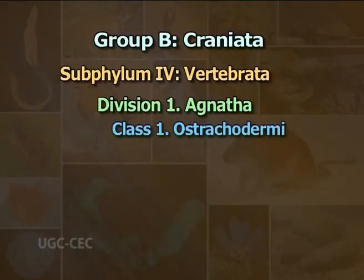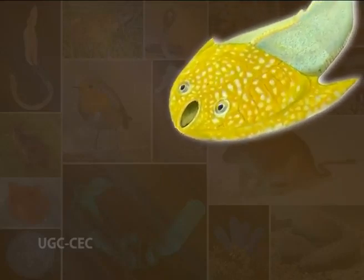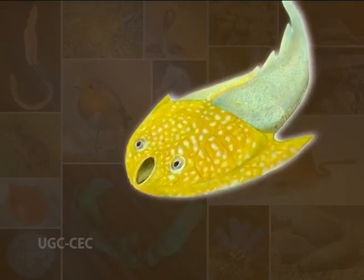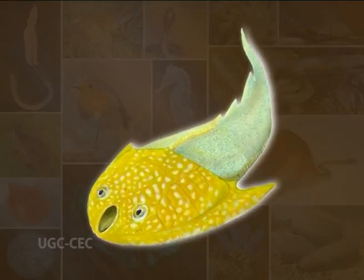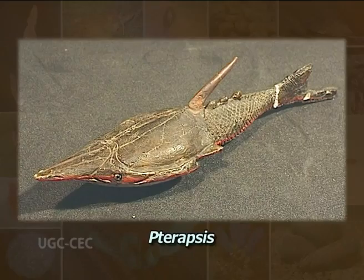Class 1: Ostracodermi — in Greek, ostrakon means shell and derma means skin. The animals of this class have bony dermal plates in the skin. These are small animals having a large heavily armored head and a fish-like body and tail. They possess rounded gill slits. Examples are Cephalaspis and Pteraspis.